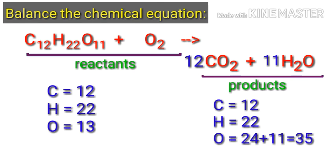The carbon atoms and hydrogen atoms are balanced. Now we need to balance the oxygen atoms. To do this, by making it so that there are 35 oxygen atoms on both sides, we need to put a coefficient of 12 in front of O2.